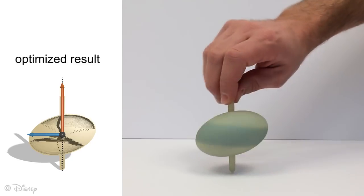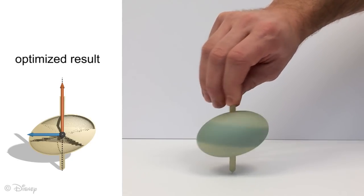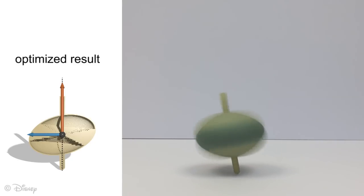In the optimized result, mass has been hollowed from the interior, resulting in a very stable spin. The principal axes for moment of inertia now align with the spin axis with a very large dominant principal moment.